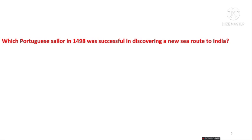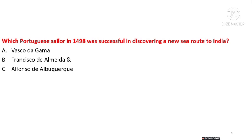The next question is: which Portuguese sailor in 1498 was successful in discovering a new sea route to India? The options are Vasco da Gama, Francisco de Almeida, Alfonso de Albuquerque, and none of the above. The answer is option A — Vasco da Gama discovered the new sea route to India in 1498.